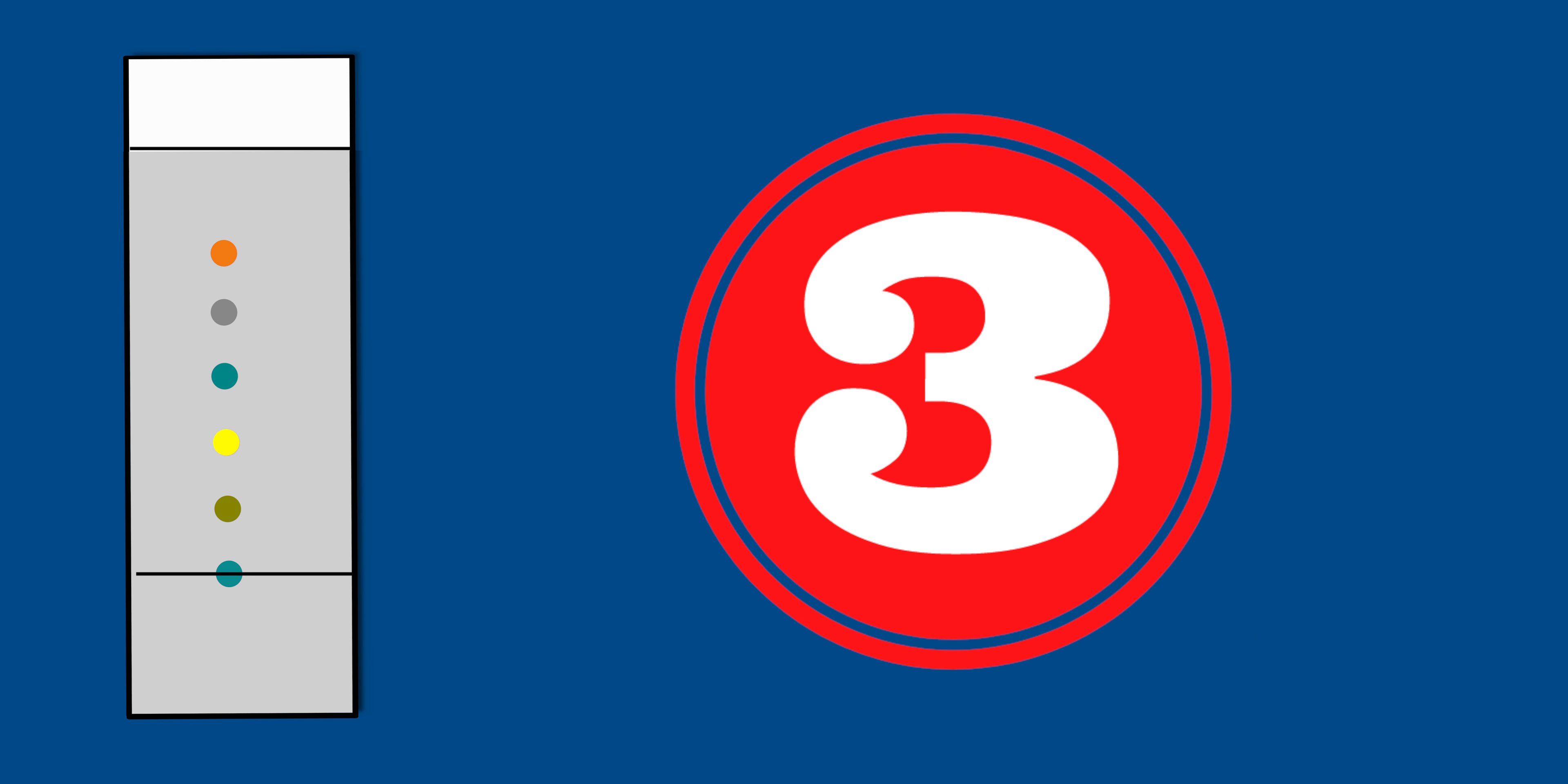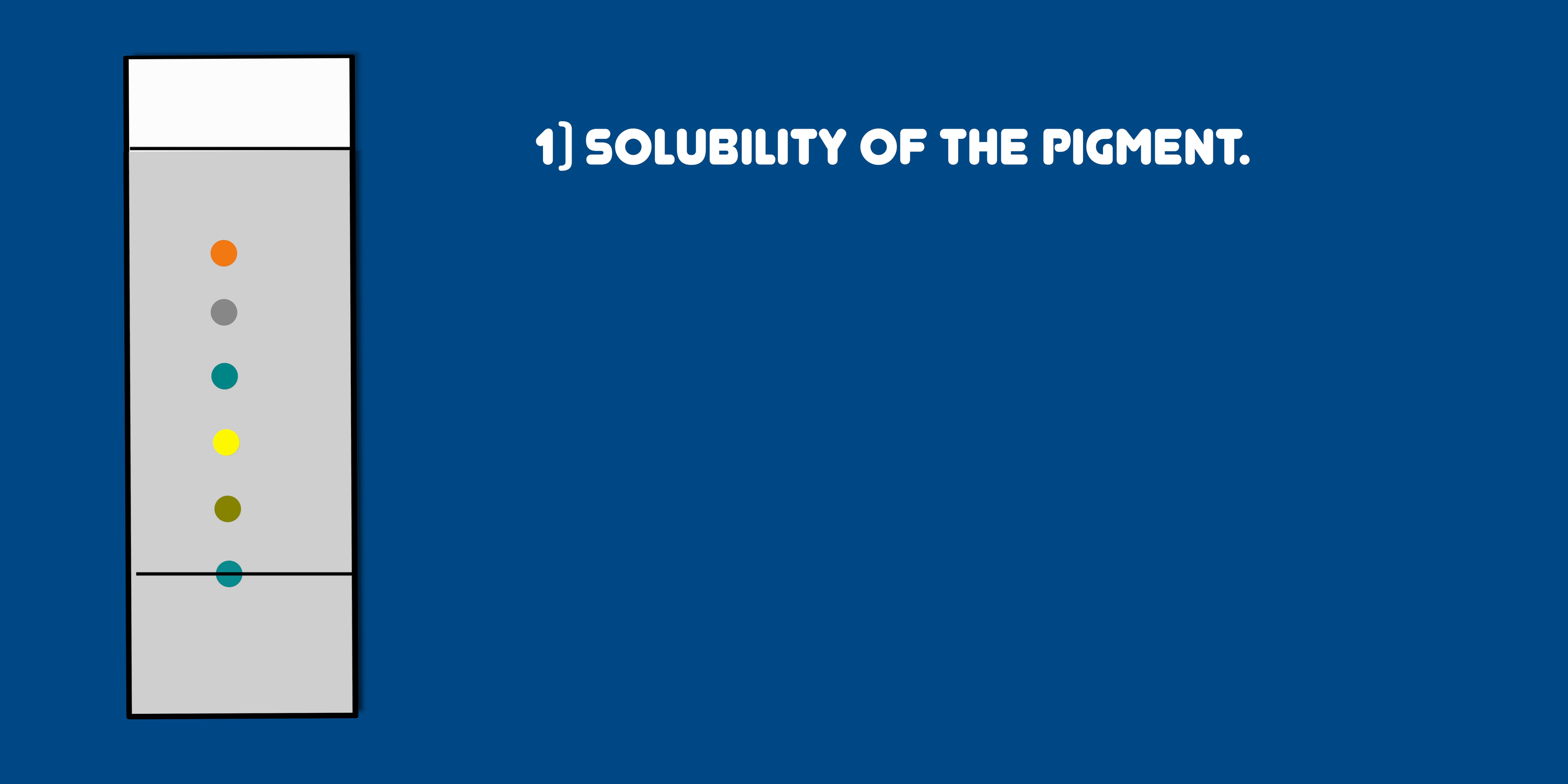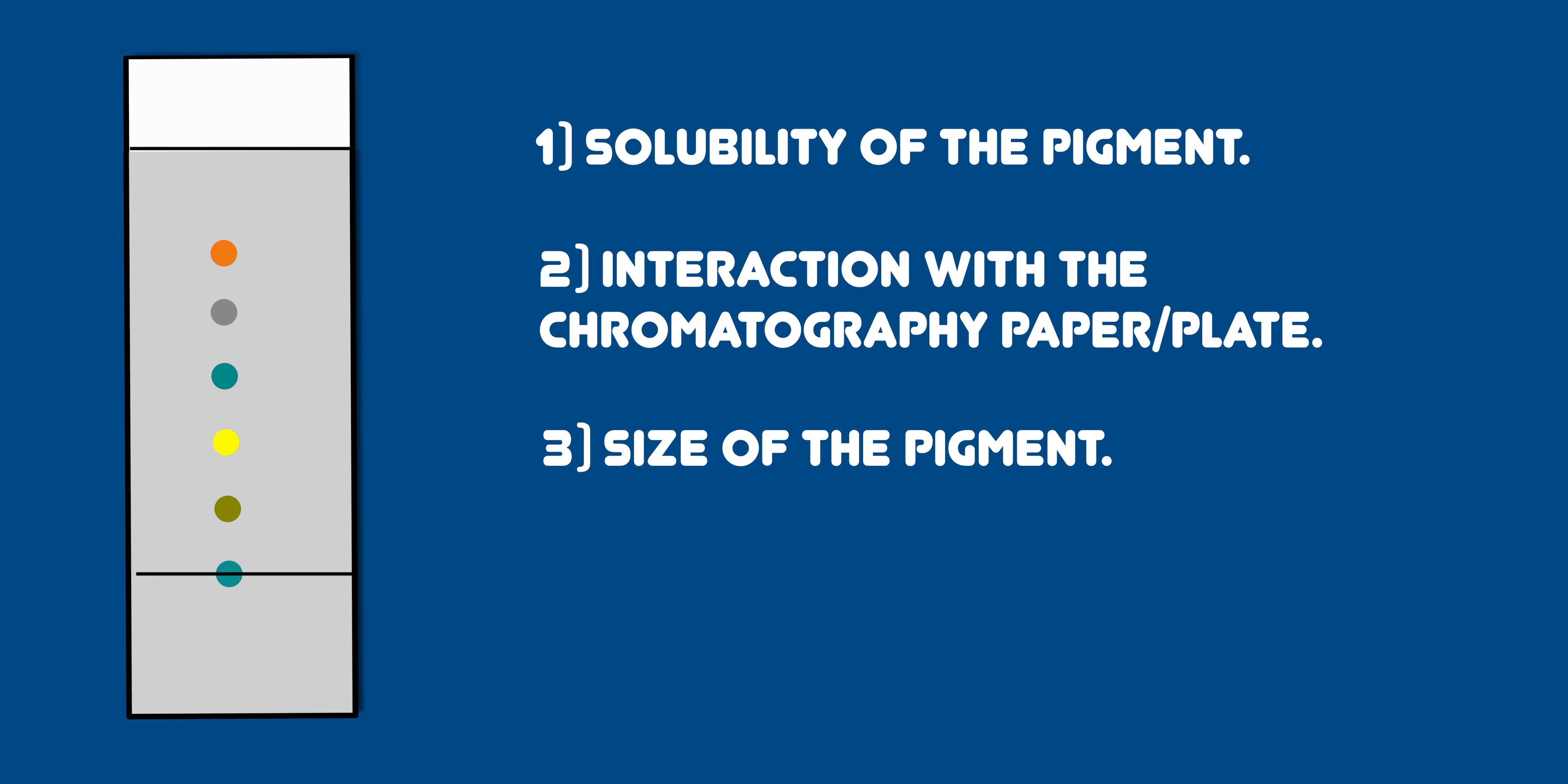Three things will influence how far the pigment will travel up the chromatography paper. Solubility of the pigment: the more soluble the pigment is in the solvent, the further it will travel. Interaction with the chromatography paper: molecules that interact more strongly with the plate or paper will not travel as far. Size of the pigments: the smaller the pigment, the further it will travel.